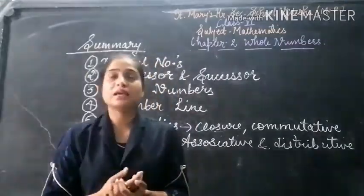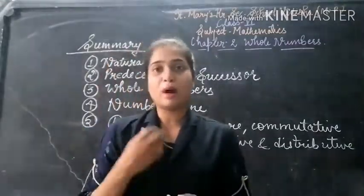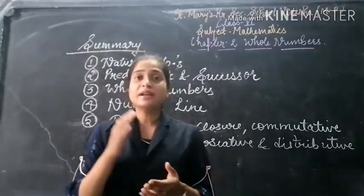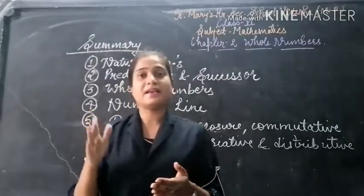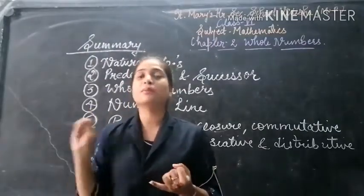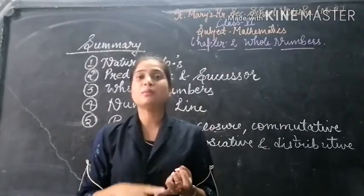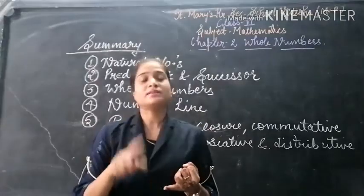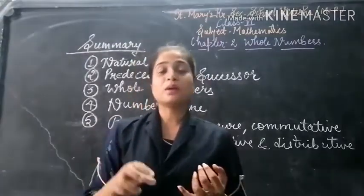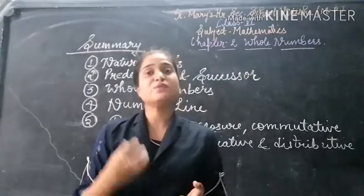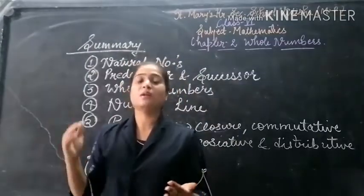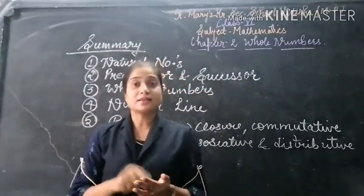Every natural number has a successor. Suppose the number is 1, the successor of 1 is 2. Suppose the number is 50, the successor of 50 is 51. So every natural number has a successor.